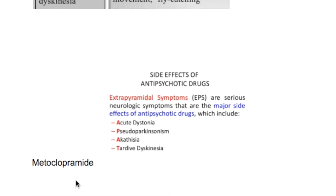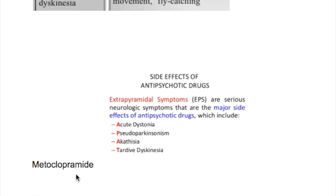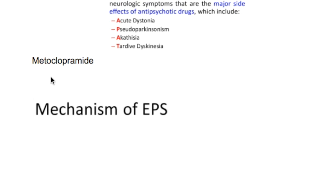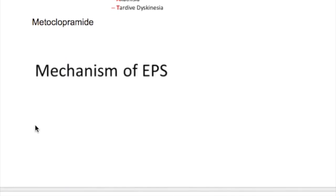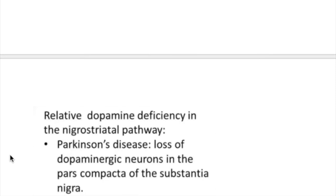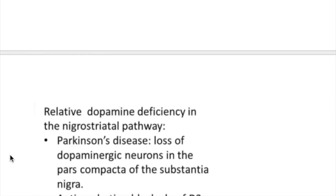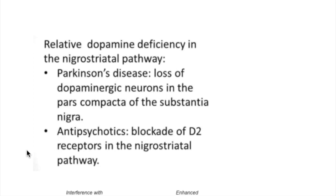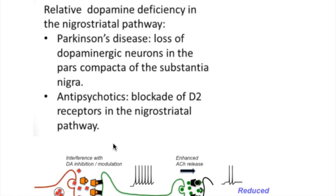Drugs that cause rigidity include antipsychotic drugs and metoclopramide, which is used to regularize GI movements. The mechanism of extrapyramidal syndrome is a relative dopamine deficiency in the nigrostriatal pathway. In Parkinson's disease there is loss of dopaminergic neurons in the substantia nigra, and antipsychotic drugs cause blockade of D2 dopamine receptors in the nigrostriatal pathway.